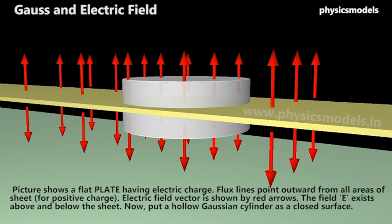We place a Gaussian cylinder to intersect that plate and to intersect the flux lines and the electric field. The lines of flux pass through the top end of the cylinder, and the lines of flux on the bottom pass through the lower face of that cylinder. There is no line of flux along the direction of the plate — no electric field along the axis of the plate. The lines of flux and the electric field vector will always be perpendicular to any surface area of a charged plate.